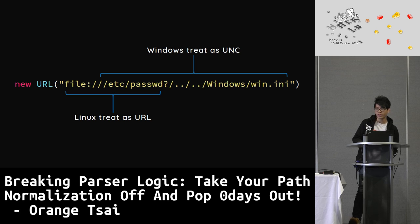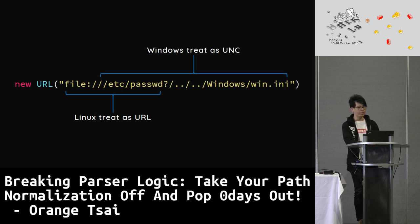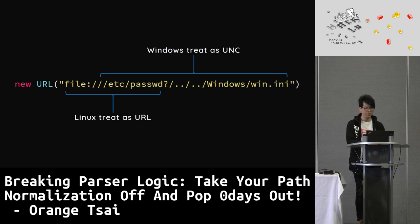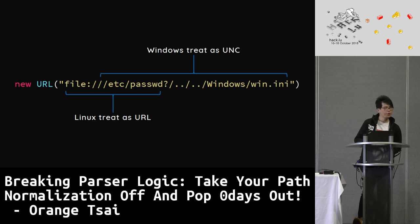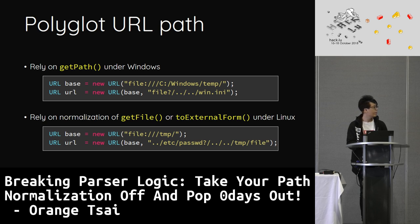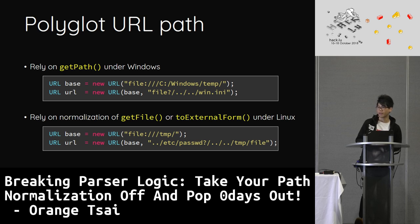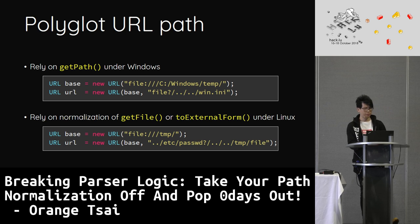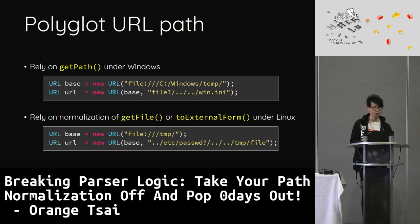Here is an interesting implementation in Java. For the same URL, there are different implementations in each operating system. In Windows, Java treats the file as a UNC path, but Linux treats it as a URL. The most important difference is that URL supports query strings, but UNC doesn't. Once we know that, there are several dangerous patterns. For example, the method getPath() only returns the part before the question mark, but the file system still recognizes the full path. On the other hand, getFile() or toExternalForm() return all the URL part. If the check relies on the normalized result, we can forge a valid path to bypass the check and read arbitrary files on Linux.